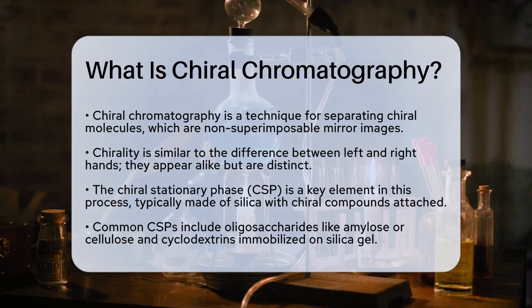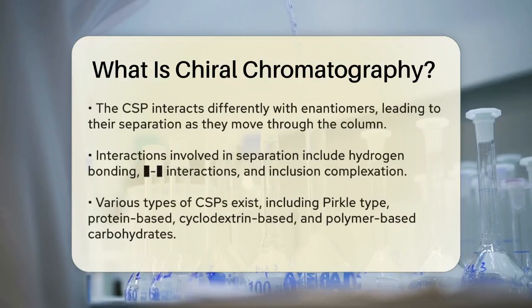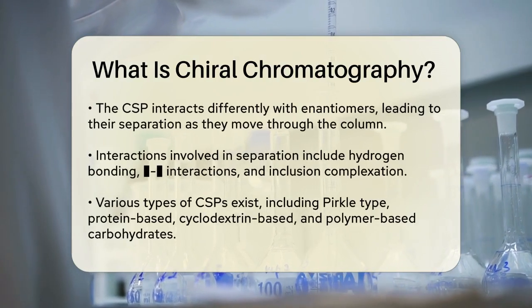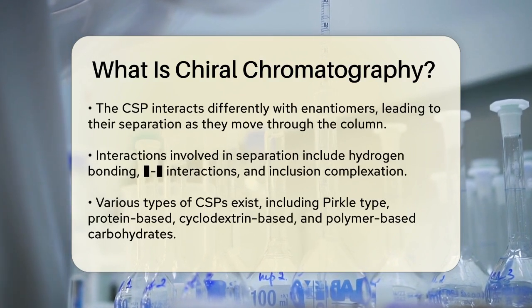In chiral chromatography, the key component is the chiral stationary phase, or CSP. This is usually a support material, like silica, that has a chiral compound or a macromolecule with many chiral centers attached to it. For example, common CSPs are made by immobilizing oligosaccharides like amylose or cellulose, or even cyclodextrins, onto silica gel.